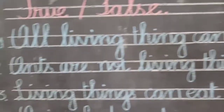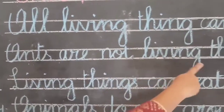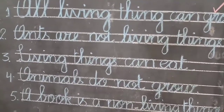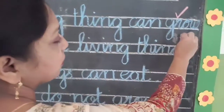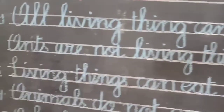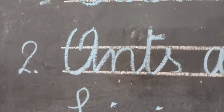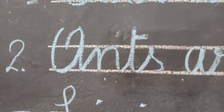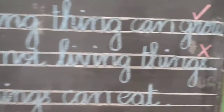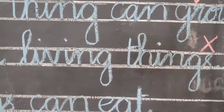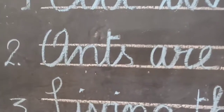Number two: ants are not living things. It's wrong — cross it. Because ants are living things. Chuntyya jo hain, wo jaan rakhti hain aur wo jaandar hain. Isliye yeh cross hai. It means this sentence is false. Ants are not living things — false.